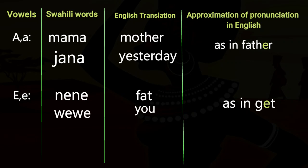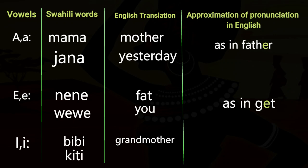The third vowel is I, in words like 'bibi' meaning Grandmother, and 'kiti' meaning Chair — pronounced as in 'bee'.